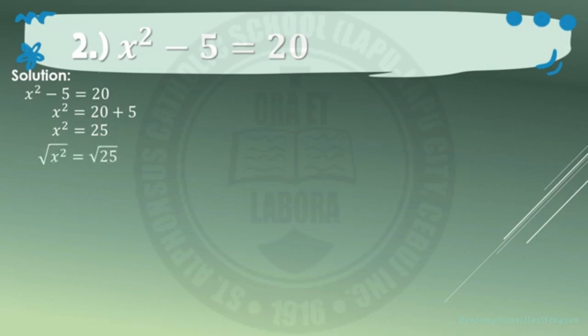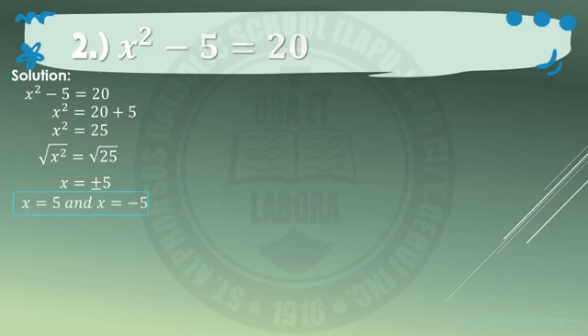Next, apply the square root property on both sides of the equation: the square root of x squared equals square root of 25. Remember to consider both positive and negative roots since both are correct. So x equals positive or negative 5. That is, x equals 5 and x equals negative 5.